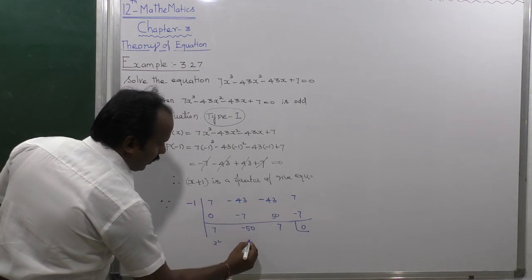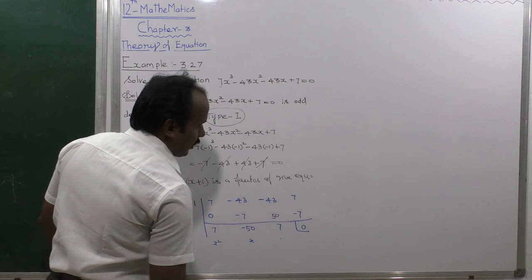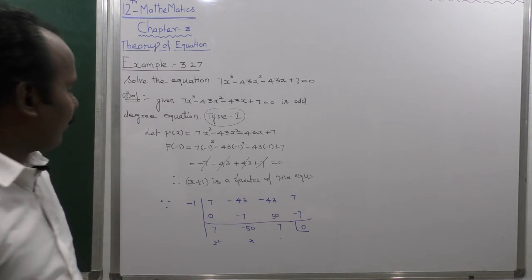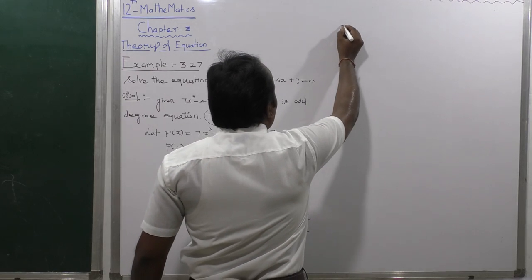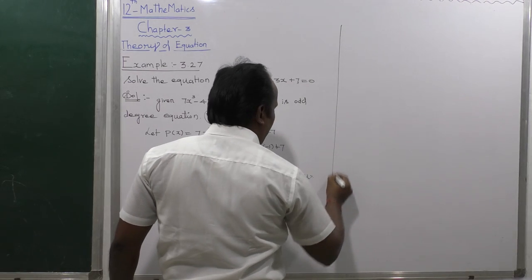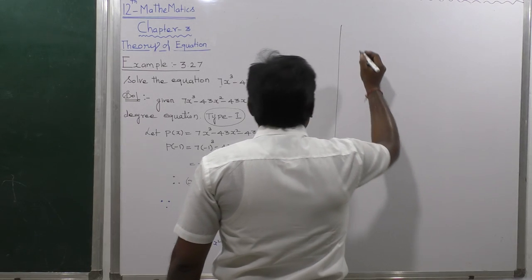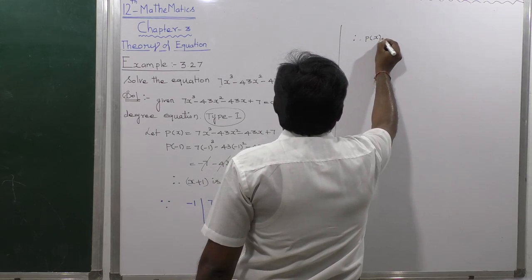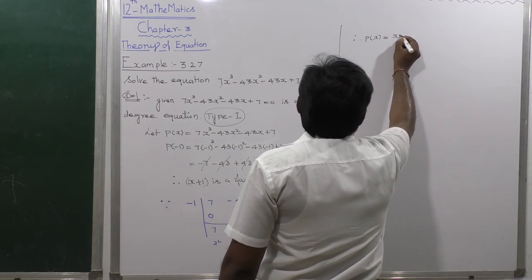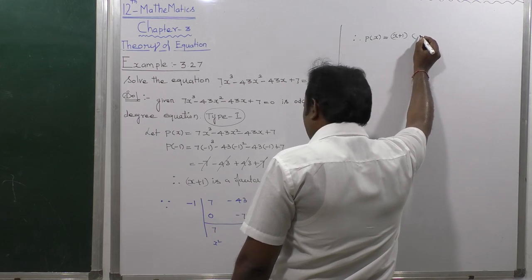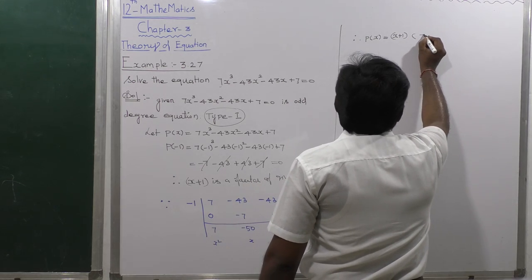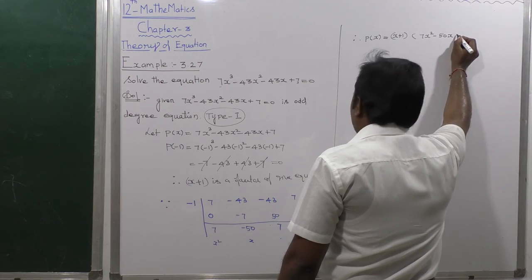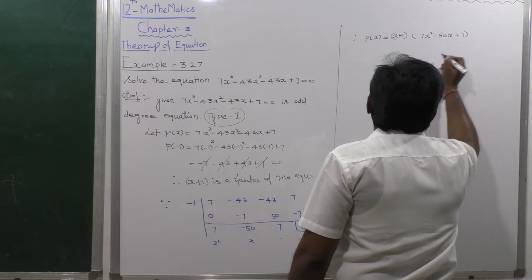The quotient coefficients give us x² term, x term, and constant. Therefore, P(x) = (x + 1)(7x² - 50x + 7). That is the other factor.